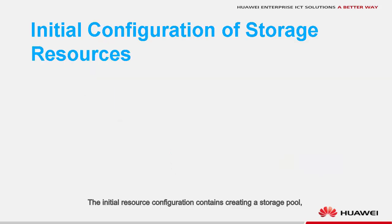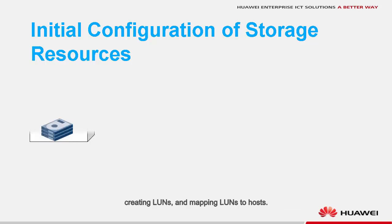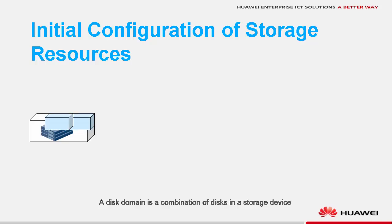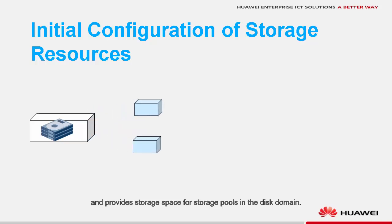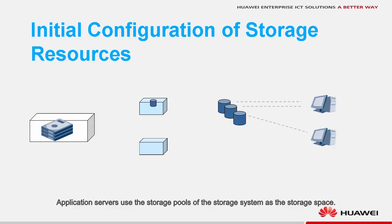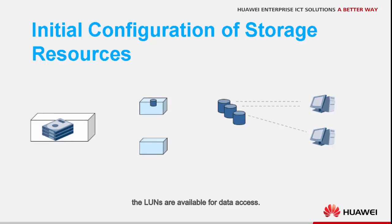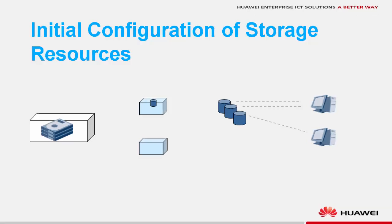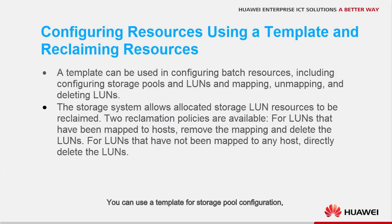The initial resource configuration involves creating a storage pool, creating LUNs, and mapping LUNs to hosts. A disk domain is a combination of disks in a storage device and provides storage space for storage pools. You can create multiple storage pools in a disk domain. Application servers use the storage pools of the storage system as the storage space. In a storage pool, you can create multiple LUNs. After being mapped to hosts, the LUNs are available for data access.